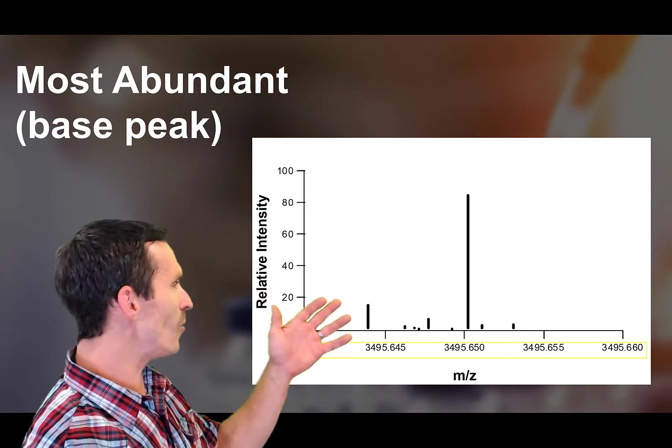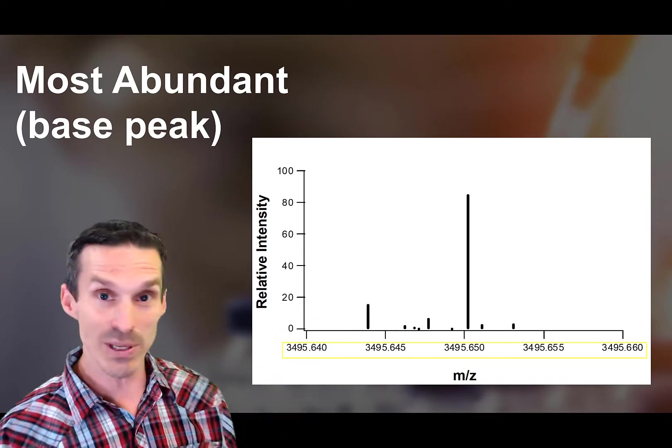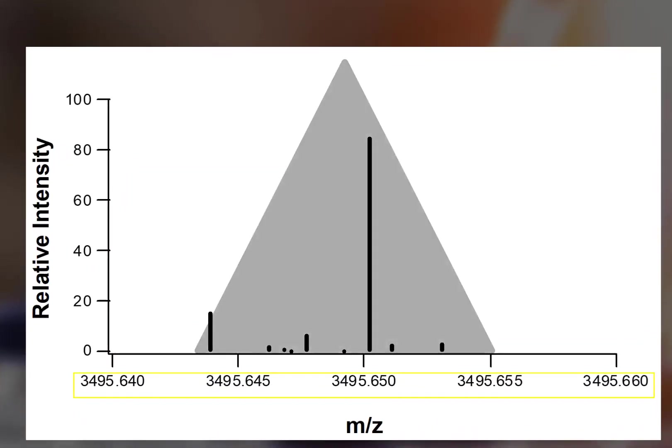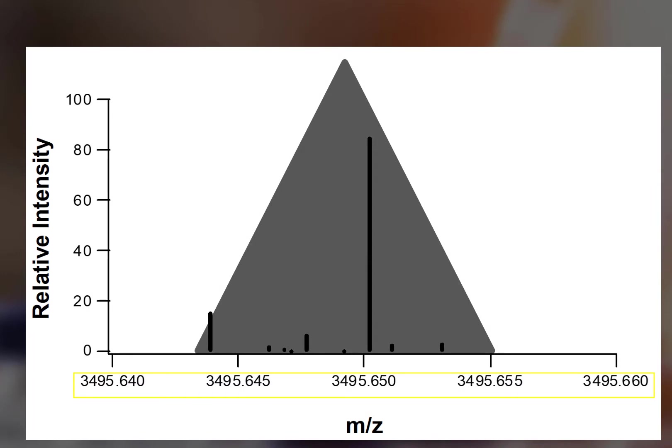The question is: do we actually even see this? And the answer is almost never. If you look at the masses between them, they're extremely close together. It's far more likely that all of these things are just going to bump themselves together. So when we're drawing these spectra, we tend to just see them as one giant lump.